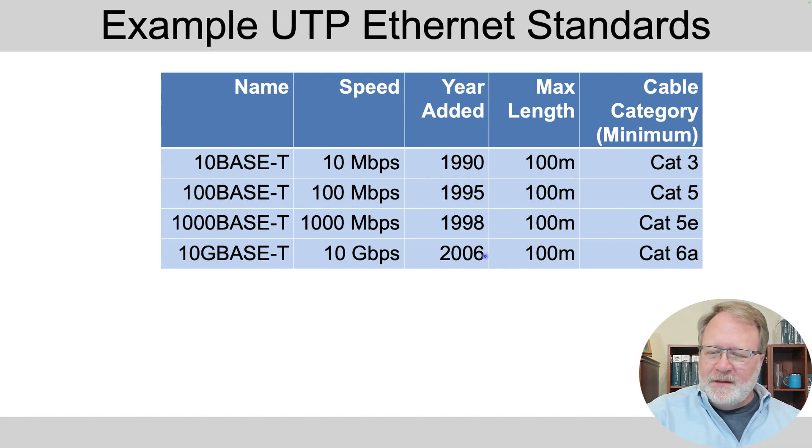So a couple of things here on the names on the left. The base T, the T refers to the unshielded twisted pair or UTP cabling, so all of these are UTP based standards. 10 with a base means 10 meg, 100 with a base implies 100 meg, and then they changed the naming for the next one historically to 10G base. Notice the G. So the G base implies gigabit speed, so it's 10 gig with that naming there.